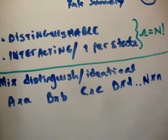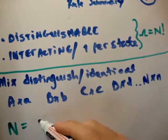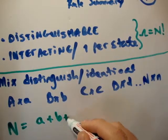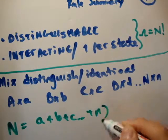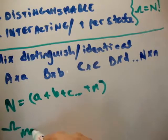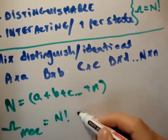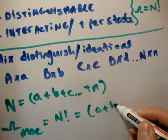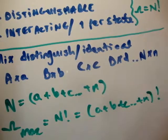Alright, well, let's look at this. Well, then the total number of particles, capital N, is equal to A plus B plus C plus N. That means the multiplicity max is equal to N factorial, is equal to A plus B plus C plus N factorial.